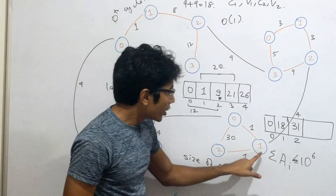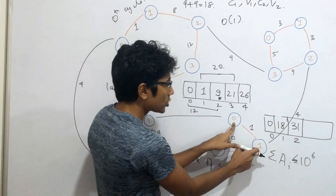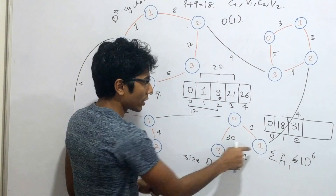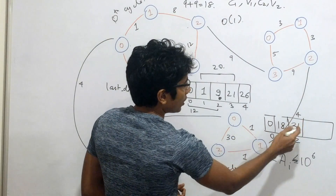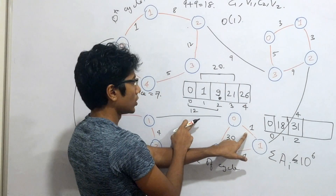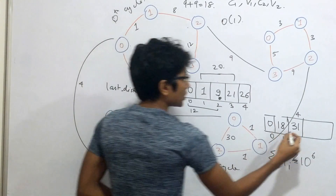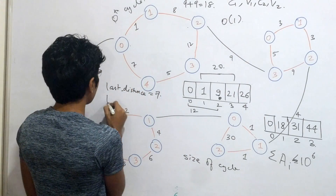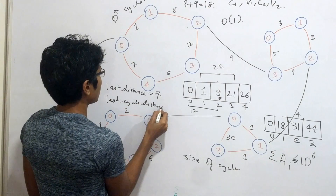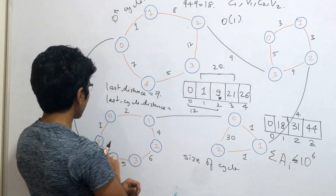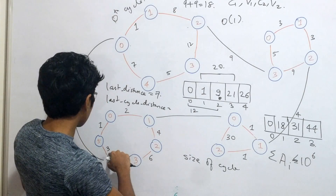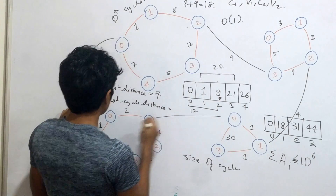You also store a last cycle distance, analogous to the per-cycle last distance, which captures the anticlockwise total. That is the anticlockwise distance across all cycles from the far end back to the start. For example, combining the smaller within-cycle paths of 3 plus 1 plus 2 equals 6, plus the connecting edge weight 4, gives a last cycle distance of 10. This mirrors the per-cycle 'last distance' concept and stores the total cycle-chain length for anticlockwise queries.